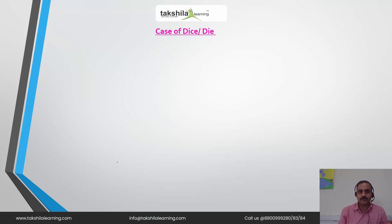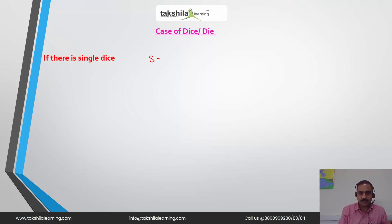In the case of a single die, the sample space will be 1, 2, 3, 4, 5, and 6. Total possible outcomes are 6.